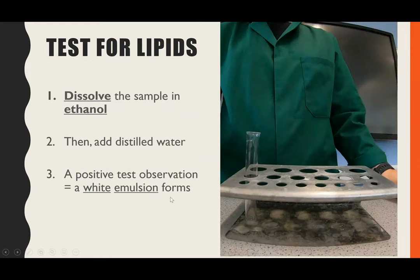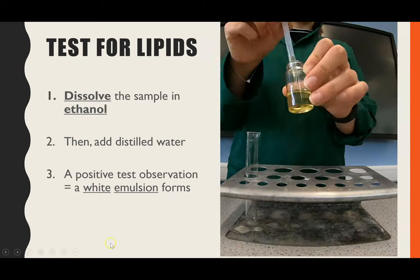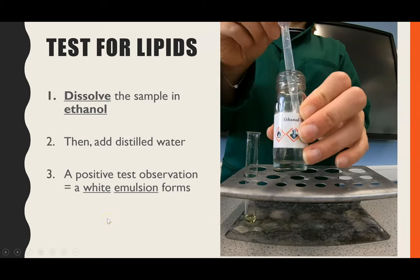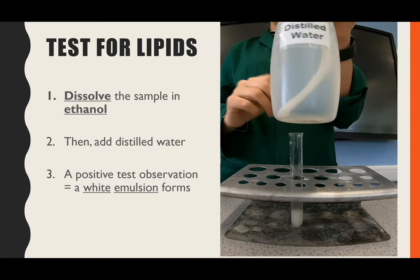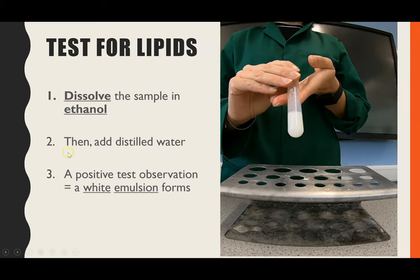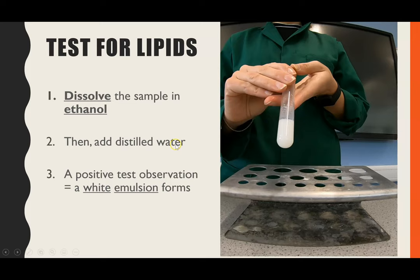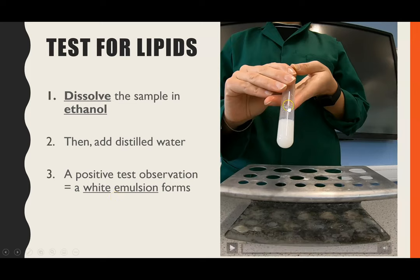The last test is the emulsion test for lipids. I'm using oil as my lipid. Step one is to dissolve the lipid in ethanol — put the bung on top, shake it, and it dissolves. Step two is to add distilled water and shake again. The positive result is that the solution turns white and forms an emulsion. You must state both parts: the white colour and the fact that it's an emulsion. There is no precipitate — no solid is formed, it is just an emulsion.